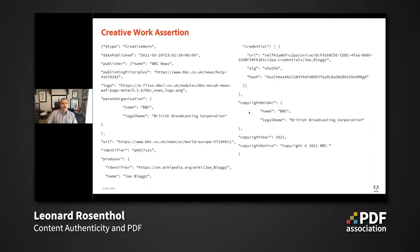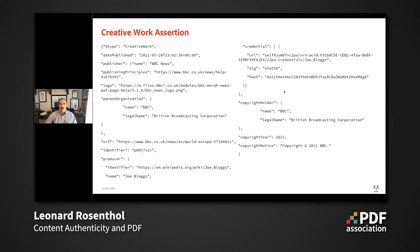Another common type of assertion is a creative work assertion, based on schema.org's Creative Work. We leveraged pre-existing standards — the action assertion comes from XMP, creative work from schema.org, so we didn't have to invent those wheels. Here you can see the publisher — BBC News — being represented, with Joe Bloggs as the producer, along with copyright information from BBC. All of this is incorporated as another assertion providing information about the asset.